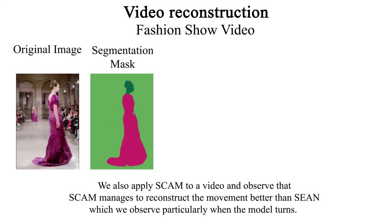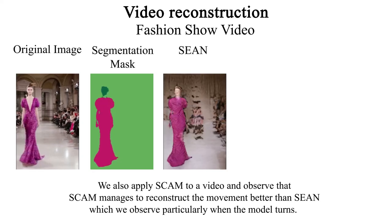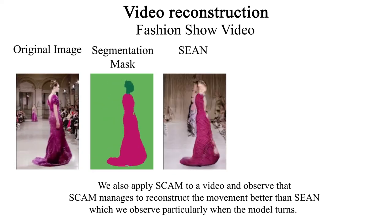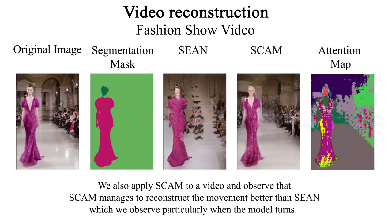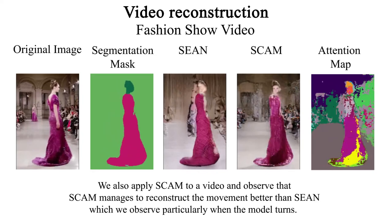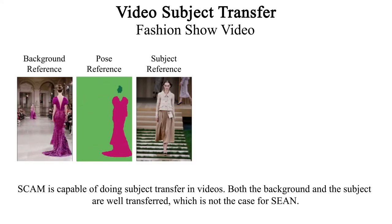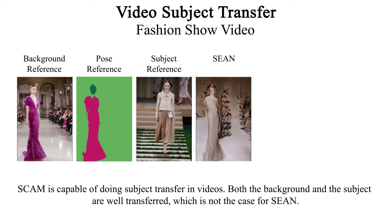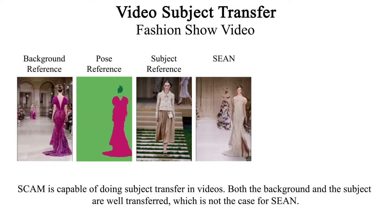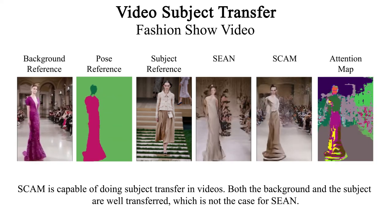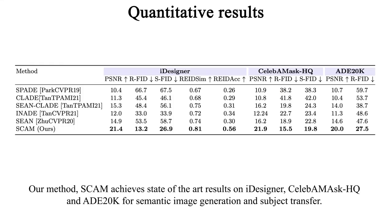We also apply SCAM to video and observe that SCAM manages to reconstruct movement better, which is particularly evident when the model turns. SCAM is capable of doing subject transfer in videos, where both the background and the subject are well transferred. Our method SCAM achieves state-of-the-art results on iDesigner, Selby-MaskHQ, and IDEA to Nikkei for semantic image generation and subject transfer.